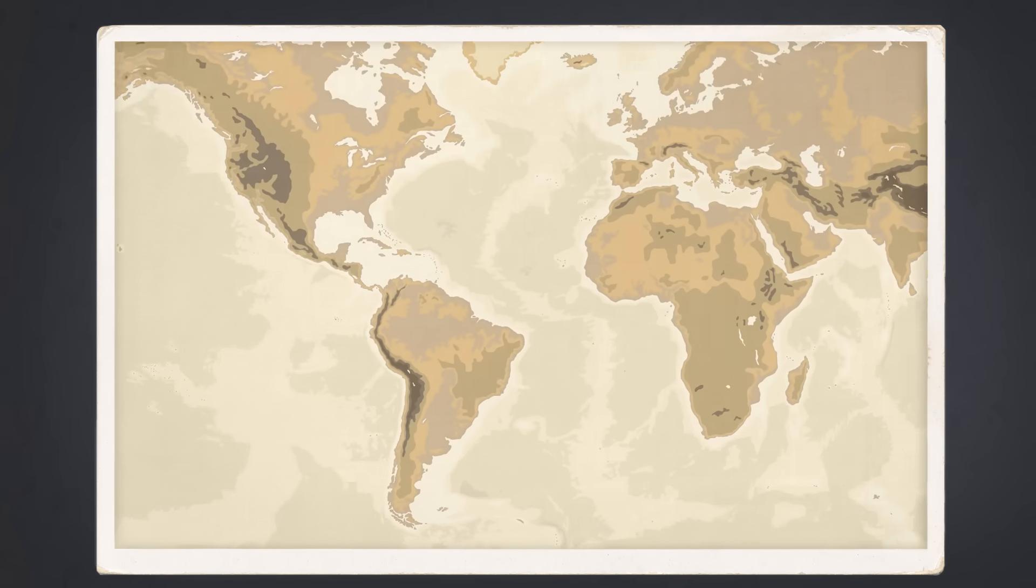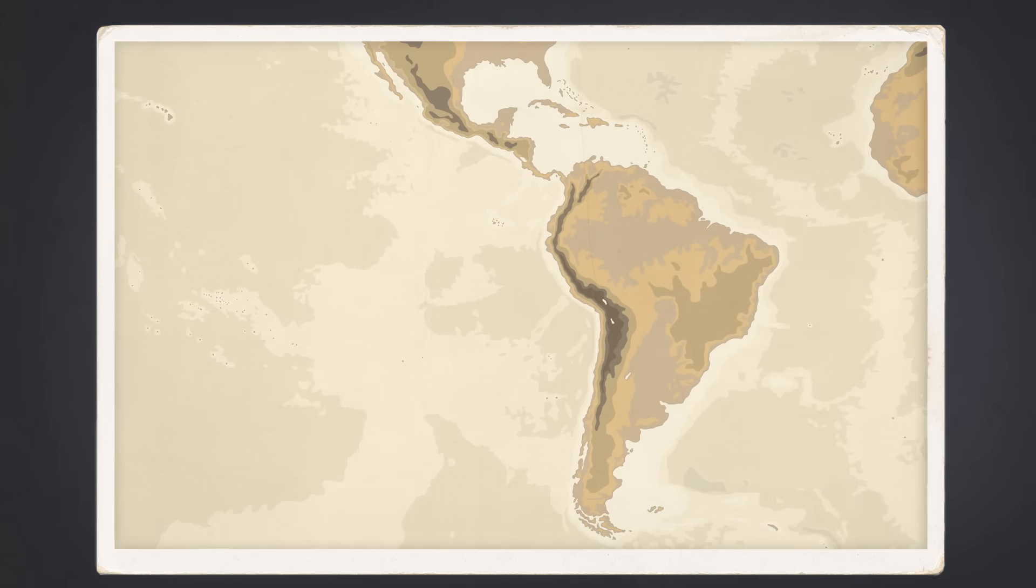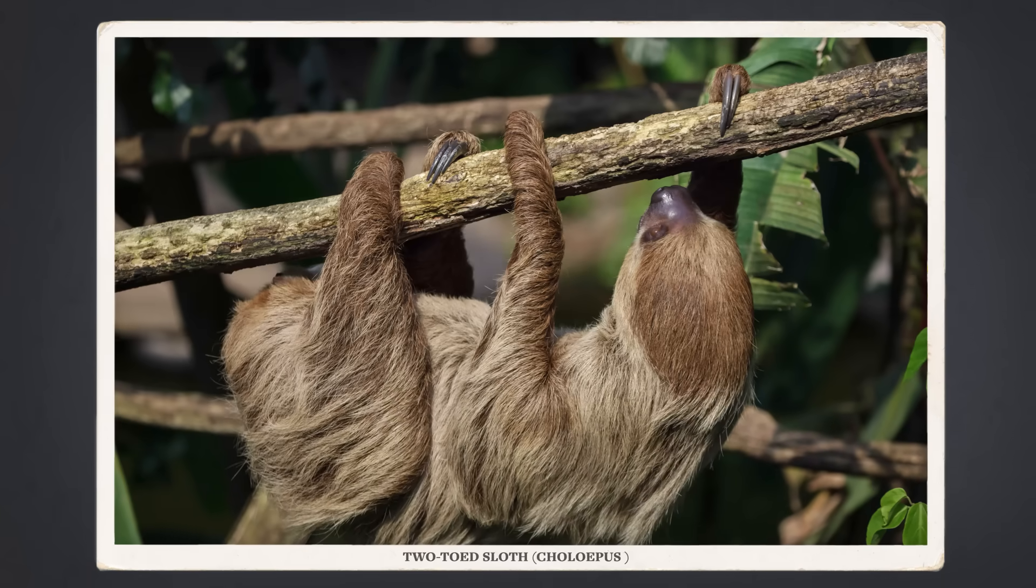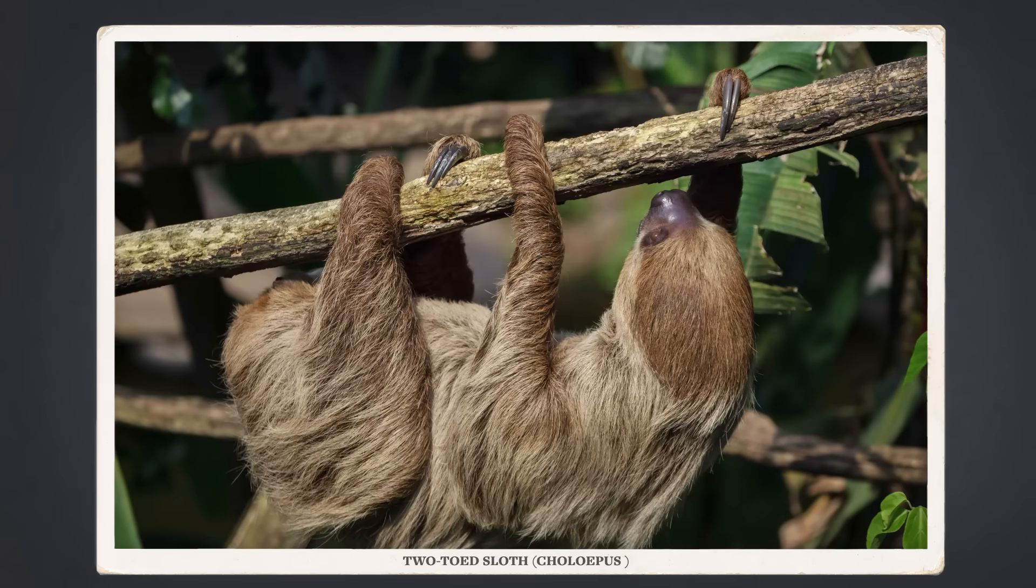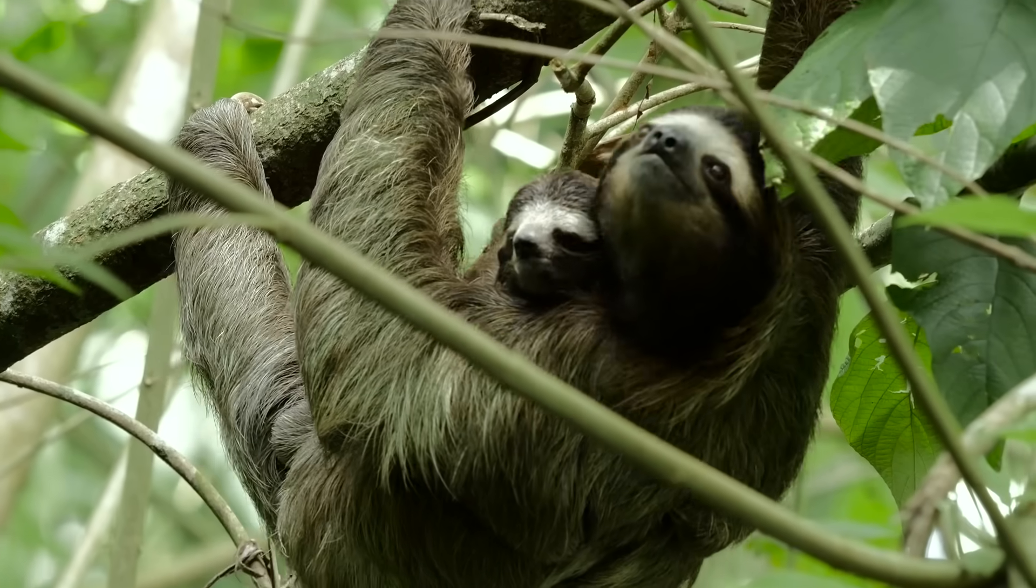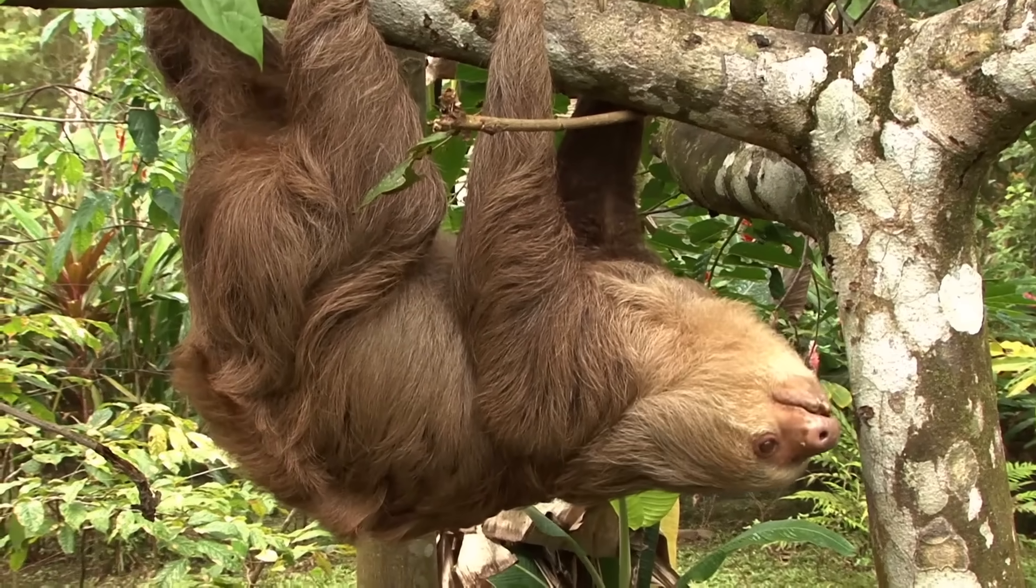Both of the two modern genera of living sloths live in Central and South America. There are the three-toed sloths, which are members of the genus Bradypus. And then there's the two-toed kind, known as Choloepus. And they're both suspensorial, which means they spend their time not just in trees, but suspended from trees.